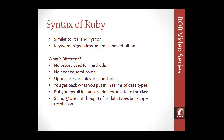Ruby treats uppercase variables as constants, so keep your variables lowercase unless you want a value that doesn't change. Also, you get back what you put in in terms of data types. For example, 7 divided by 3 will give you 2, not 2.3, because you put in integers and you get integers back. If you want a float result, you'd put in 7.0 divided by 3.0 and then you'd get 2.3.